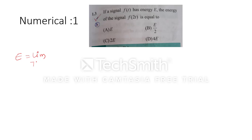The first numerical: it is given that if a signal F(t) has energy e, the energy of the signal F(2t) is equal to — four options are given. We know that energy is equal to the limit as t tends from minus infinity to infinity of F(t) squared dt. Here they are performing time scaling by making F(2t).